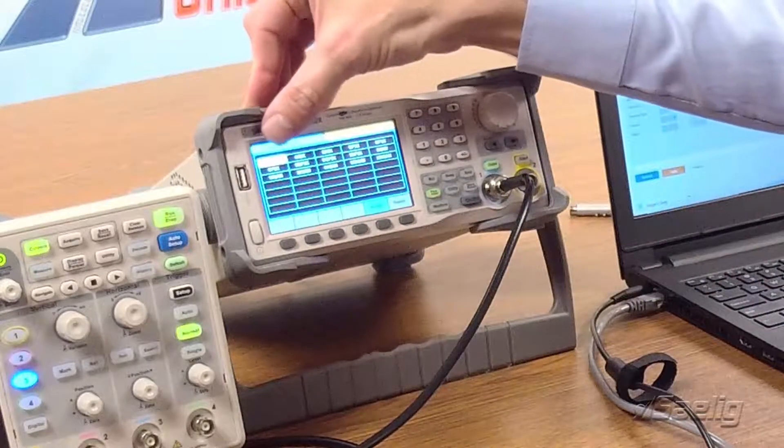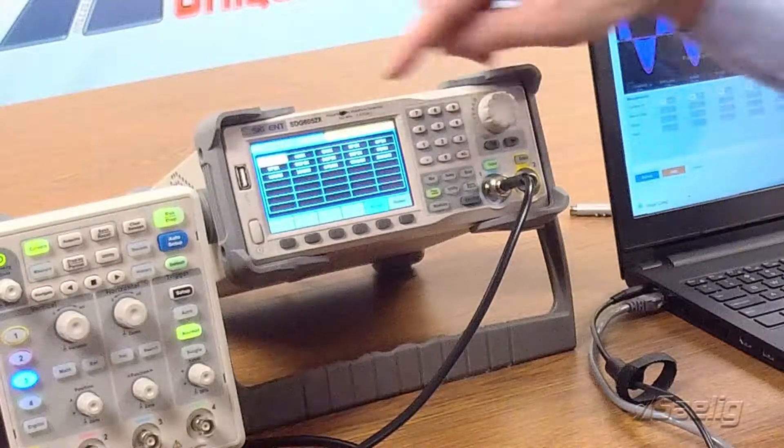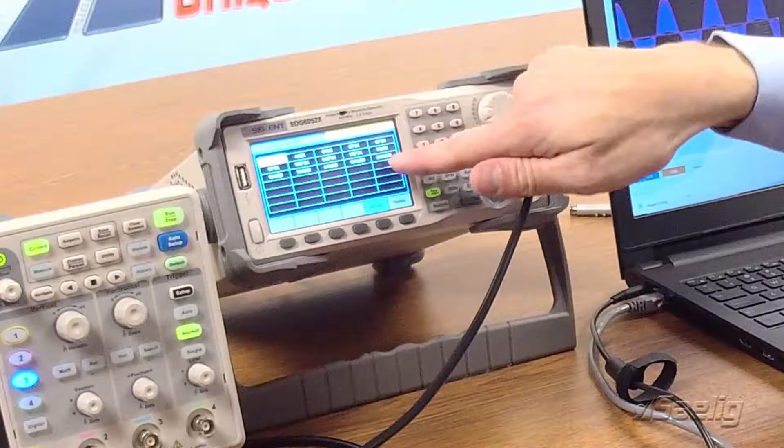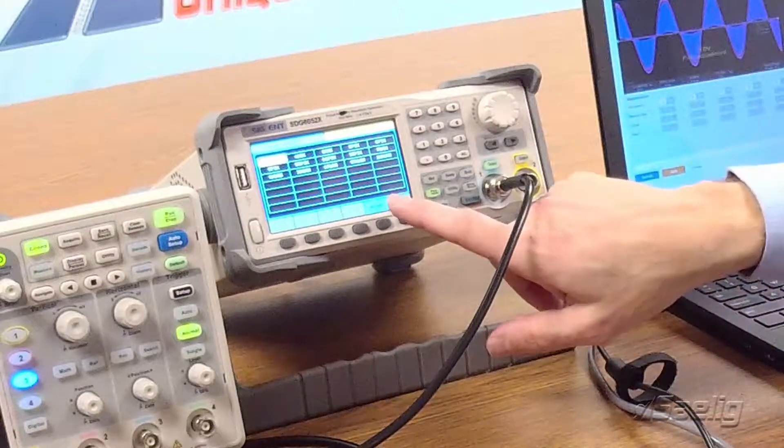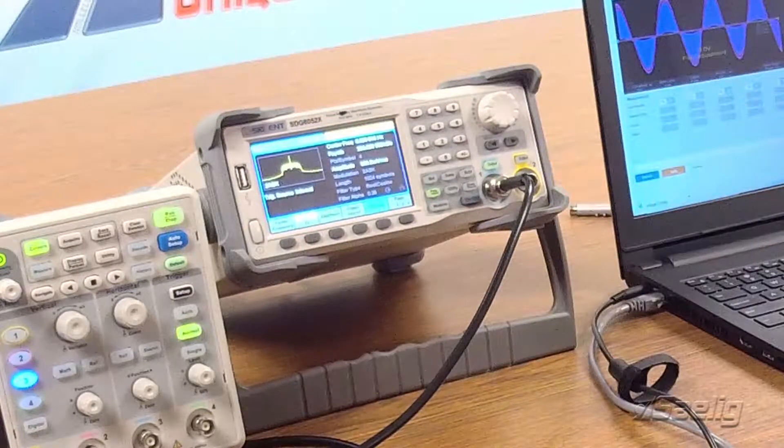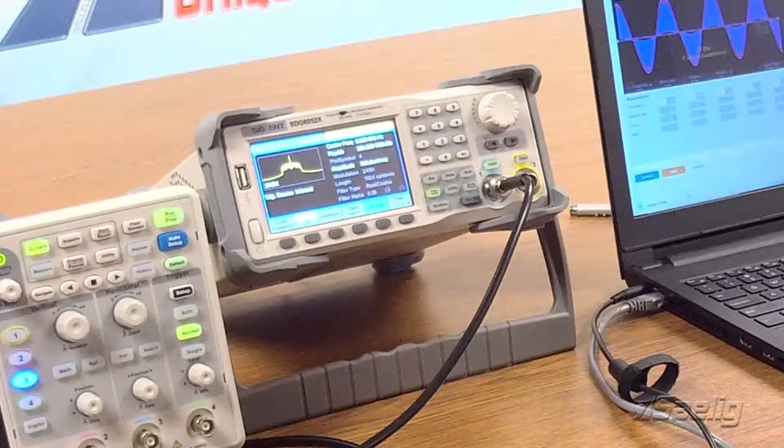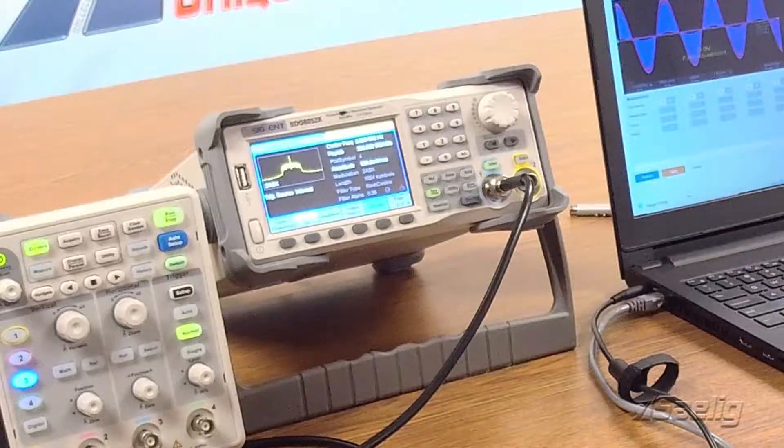So we've got... Here we've got 2 ASK, 4 ASK, 8 ASK, BPSK, and then a number of QAM capabilities. Here we've got all the way up to 256. There is also a software application that allows you to design and build your own modulation schemes. That is called EasyIQ, and that's free software that comes with that particular option.